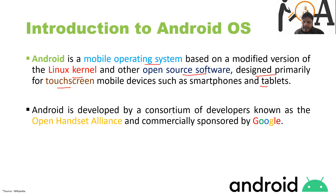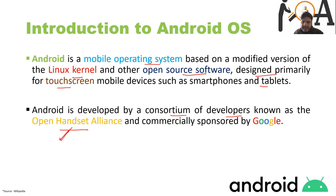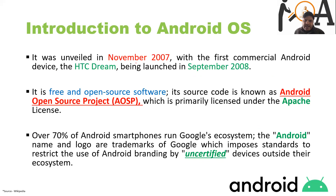Android is developed by a consortium of developers known as the Open Handset Alliance, and commercially sponsored by Google. It was unveiled in November 2007 with the first commercial Android device, the HTC Dream, which was launched in September 2008.